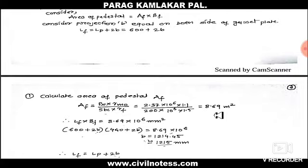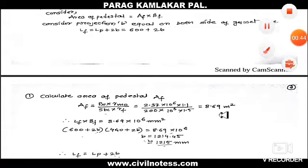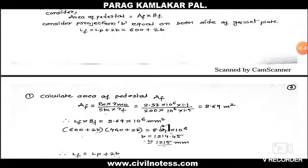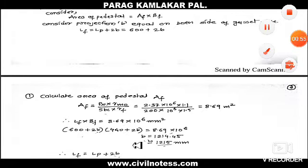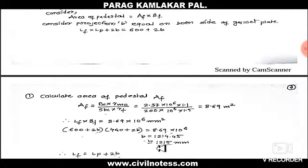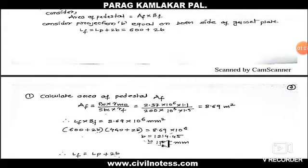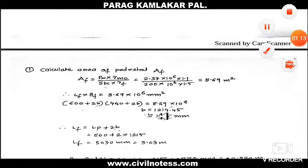After getting the area of the pedestal, it can be easily found as LF and BF, which is very easy. The value we get is 8.9669 meter square. Just convert it into mm square: 8.9669 into 10 to the power of 6 mm square. So LF into BF: 600 plus 2B into 400 plus 2B equals the area of the pedestal. Put it into your calculator and you get B equals 1121.45, so round it up to 1215 mm.